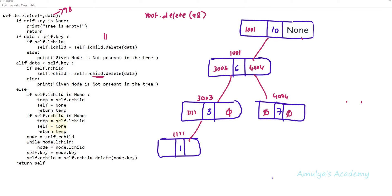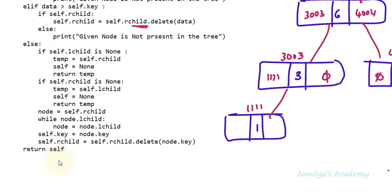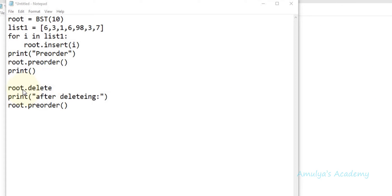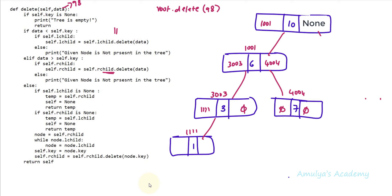There are no other statements to execute here, so next it executes the last statement of this method: return self. Self is the root node now, so the function call returns to the main program. We called root.delete(98), so it returns back there and prints the next lines after deleting, then prints the nodes in preorder. That is how this method works for a leaf node.